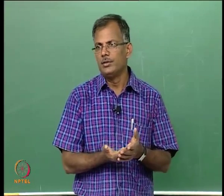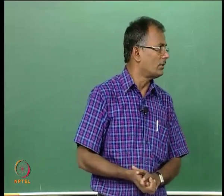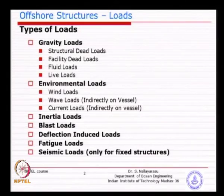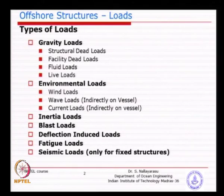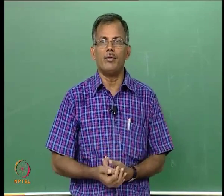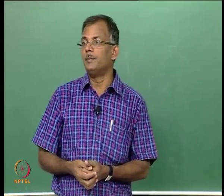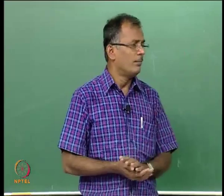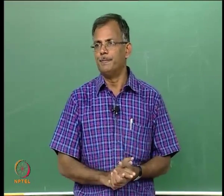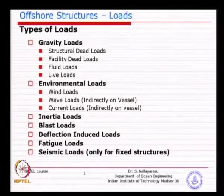Basically, for a cross-section — if it is a tubular section, you can calculate the cross-sectional area, multiply by the length, and find out the total weight. When it comes to analysis, you normally distribute the load — as you might have studied in basic mechanics for bending moment diagrams on beam structures or columns. Mostly, dead loads are distributed on the member.